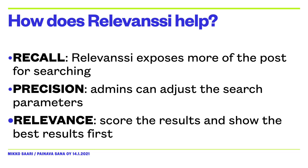Here's how Relevanssi is going to help you in the quest for the perfect search results. To increase recall, you can include content in custom fields, taxonomy terms, and inside PDF attachments. The default WordPress search excludes many relevant results because it does not look at every part of the post. To increase precision, you can remove unnecessary parts of the post from the search, adjust the search parameters and eliminate unwanted results. Finally, Relevanssi calculates a relevancy value for each post and displays the best results first. You can also modify these calculations and improve the results that way.